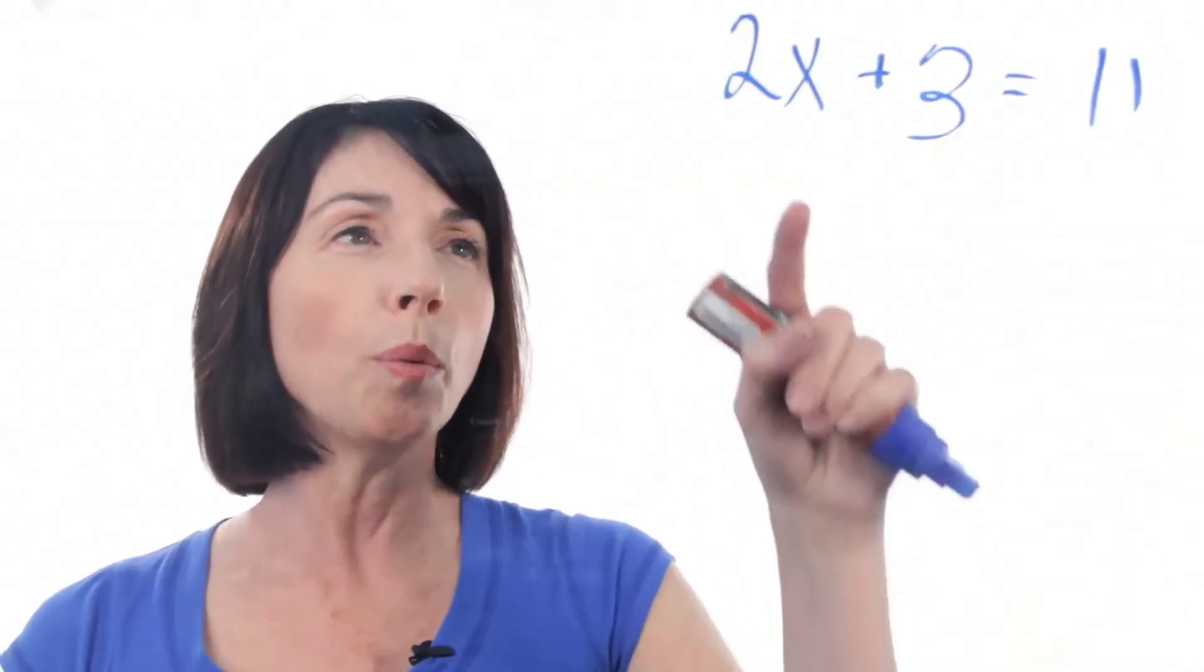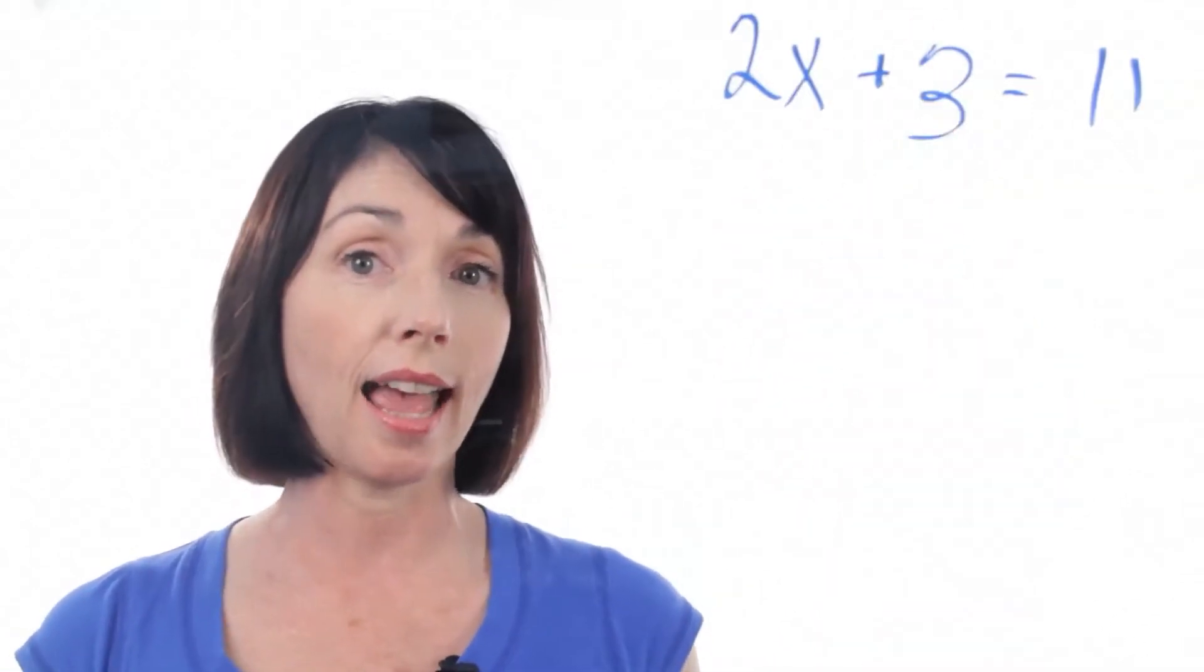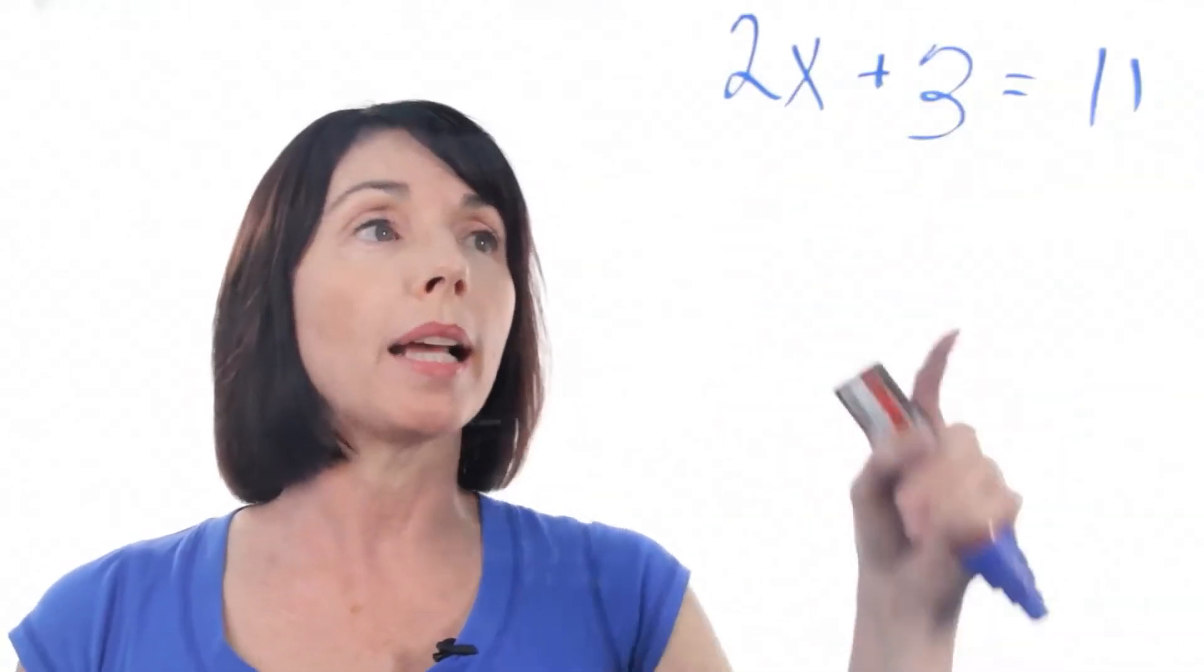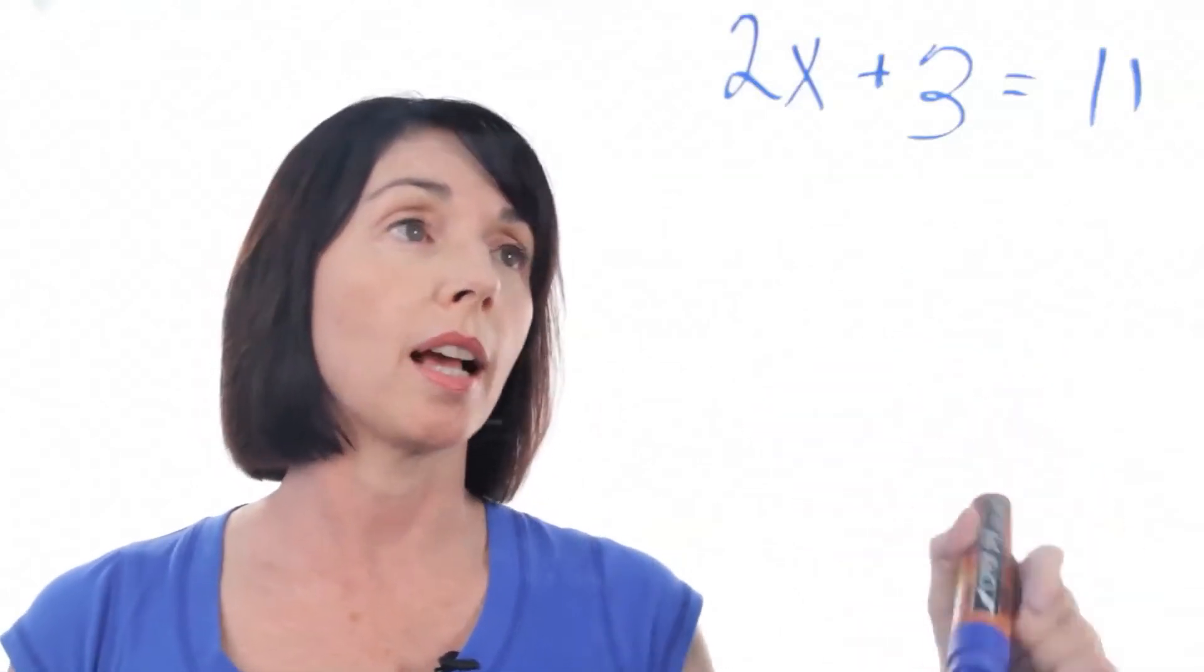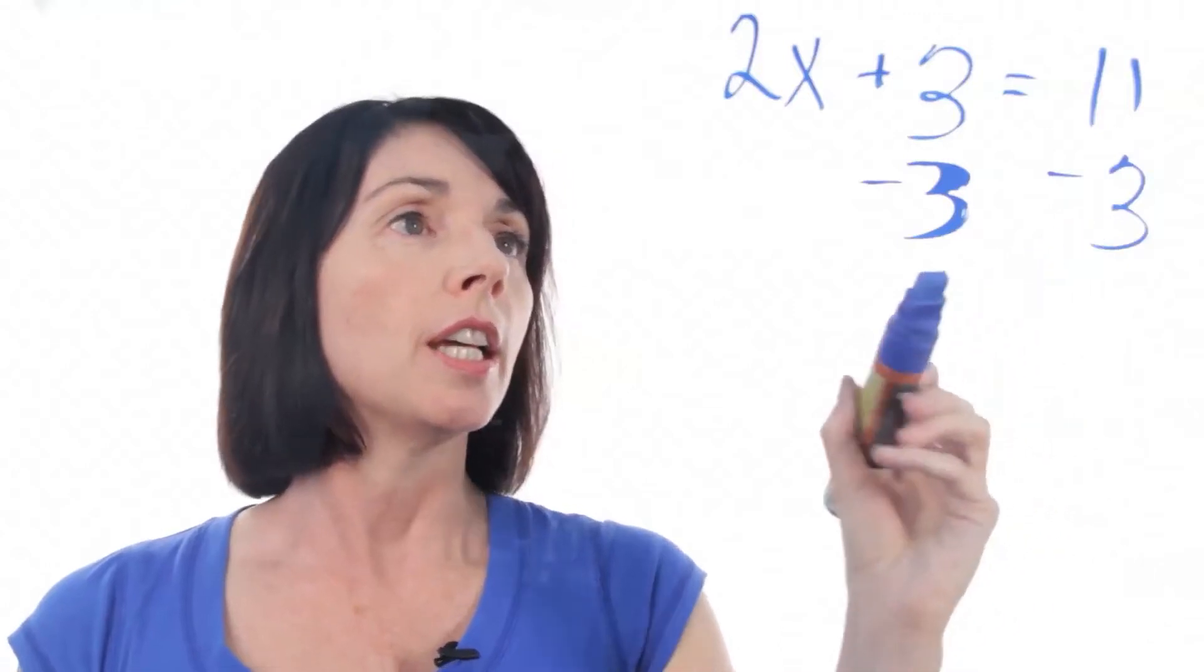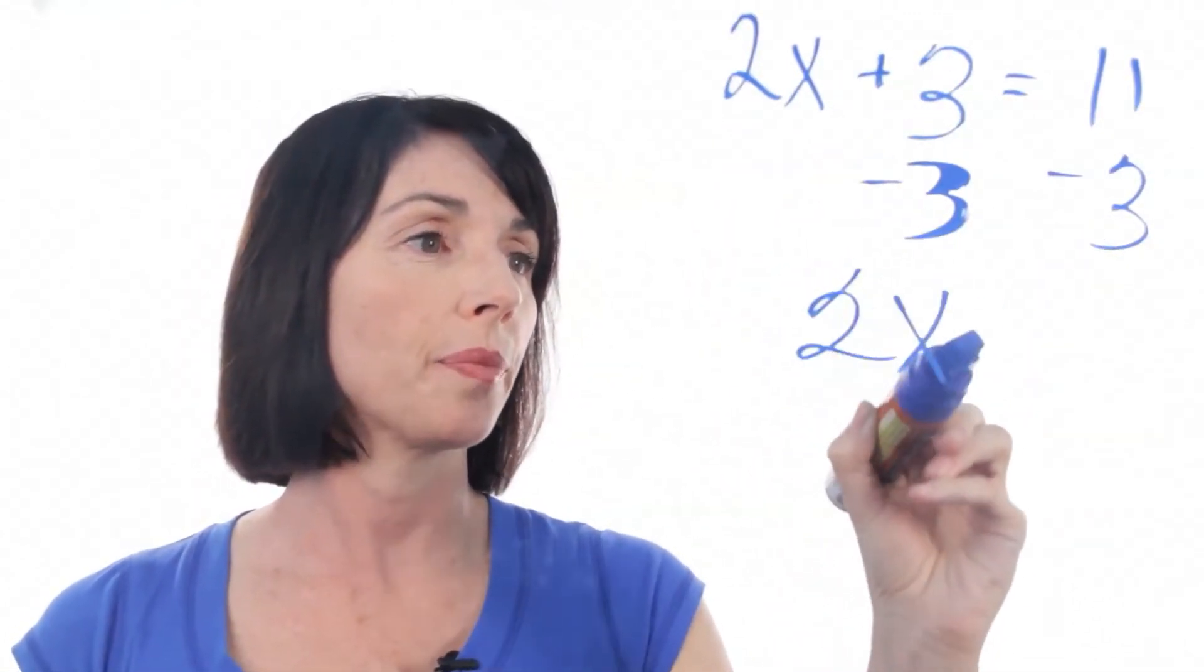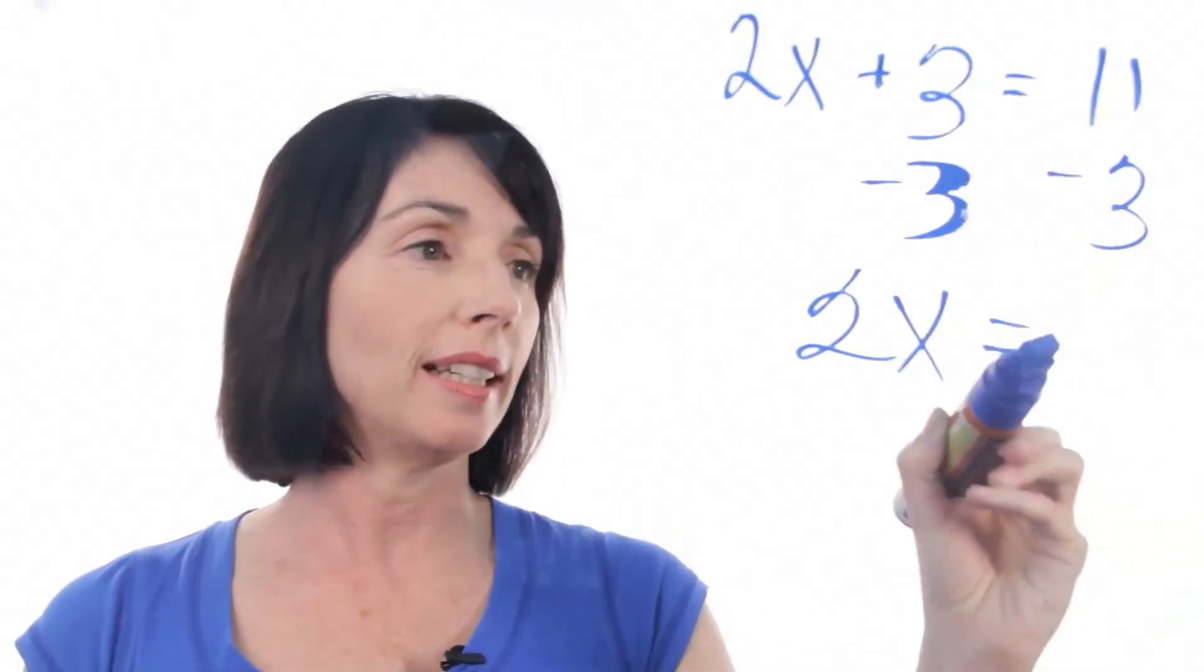Now in this case we won't worry about this 2 right away. Let's deal with this 3 that we're adding to the x term. We'll get rid of it by subtracting 3 from both sides of the equation. So 2x plus 3 minus 3 just leaves us 2x, and 11 minus 3 leaves us 8.